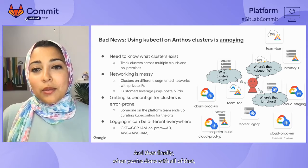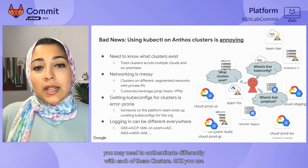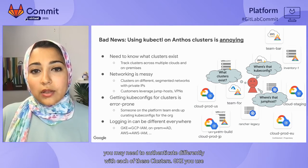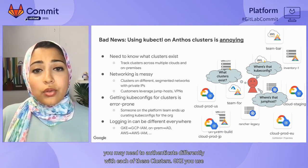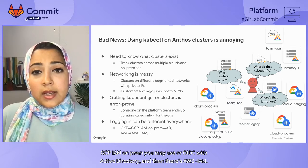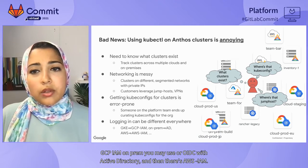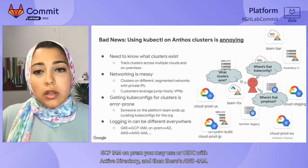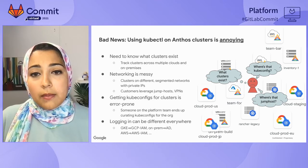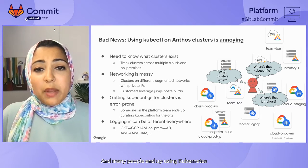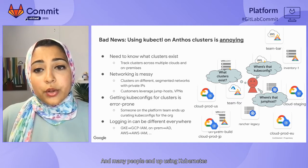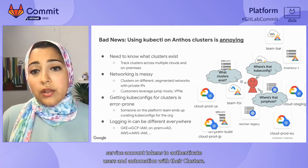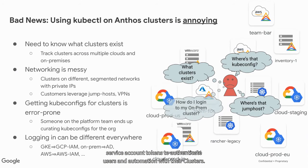And finally, you may need to authenticate differently with each of these clusters. For GKE you use GCP IAM. On-prem, you may use OIDC with Active Directory. And in AWS, there's AWS IAM. Many people end up using Kubernetes service account tokens to authenticate users in automation with their clusters.